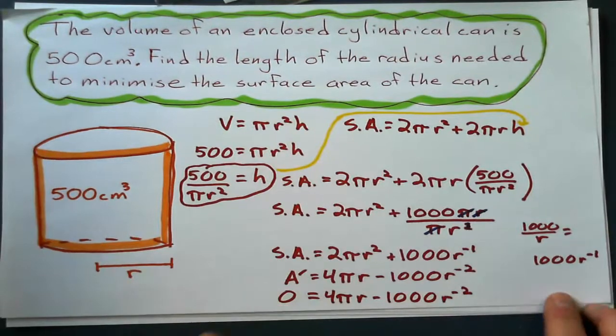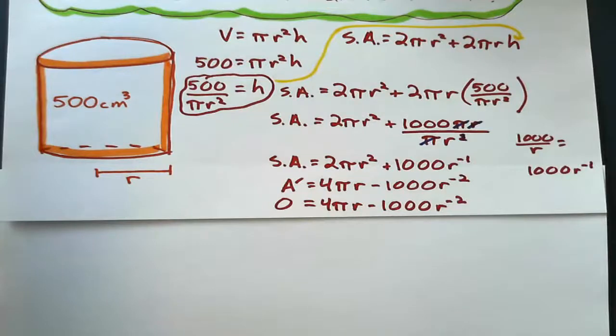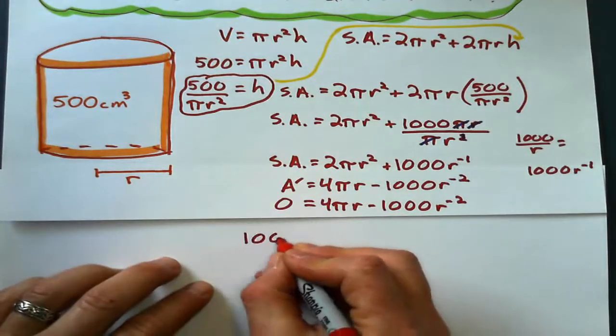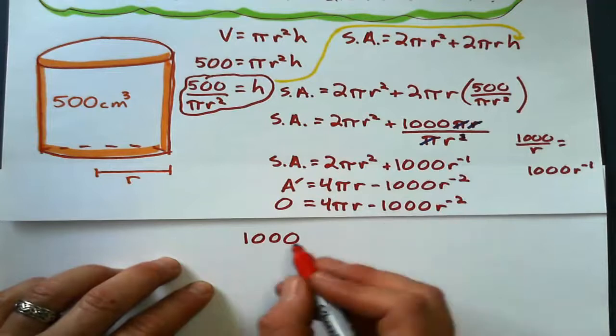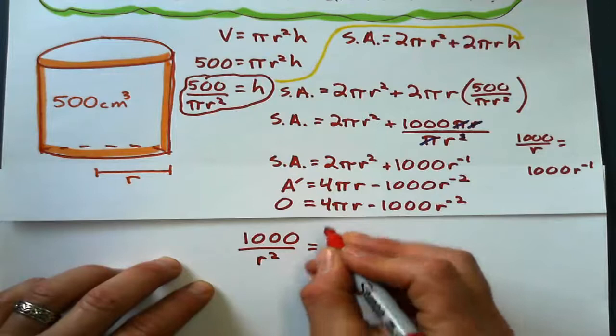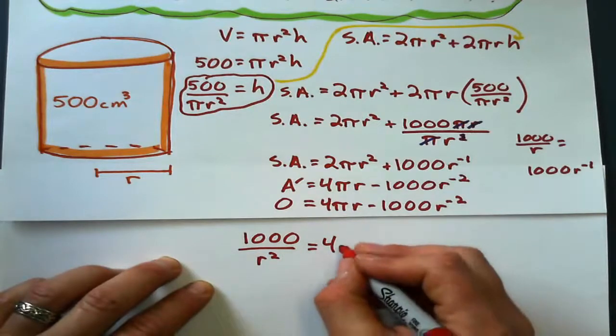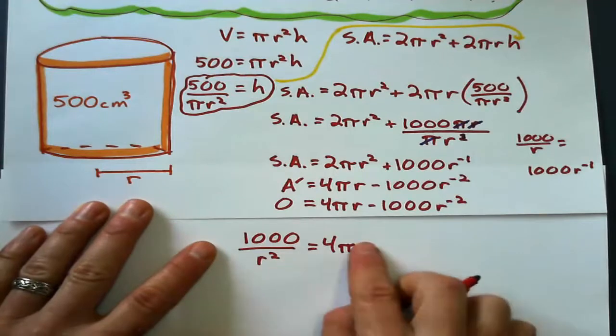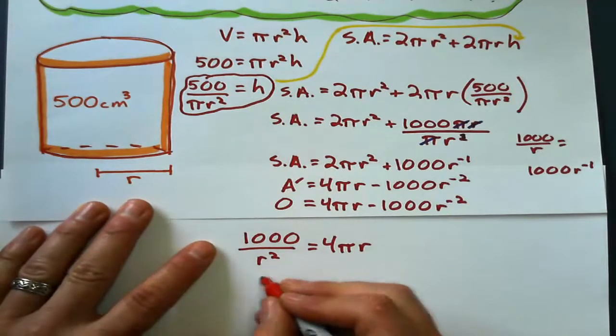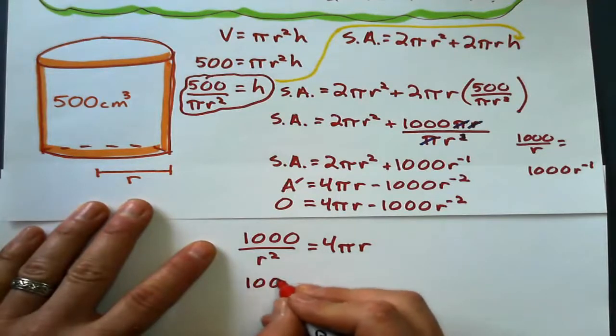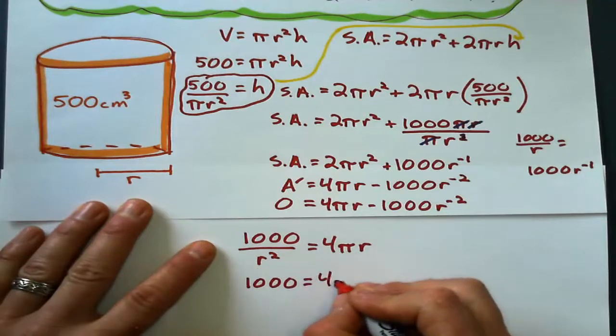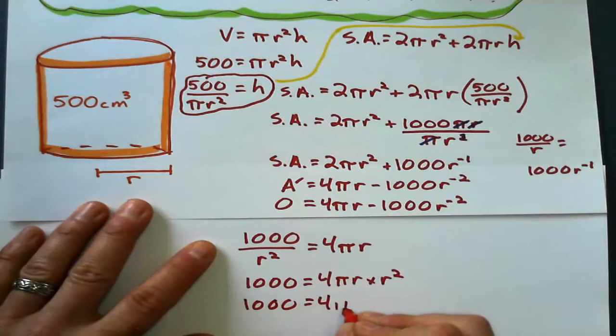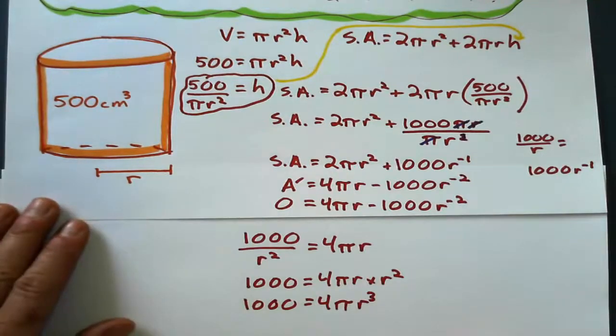And I'm going to solve for radius right now, as soon as I get more room. So, I'm going to do this, instead of negative 1000, I'm going to add that to the other side, making it 1000, positive 1000. And I'm going to change that back to r squared, instead of having a negative exponent. And I'll show you why. Because, since I'm solving for r, if I just multiply this other side by r squared, I'll get rid of all negative exponents. And I'll get rid of any fractions as well. So, 4 pi r times that r squared, which gives me 4 pi r cubed.